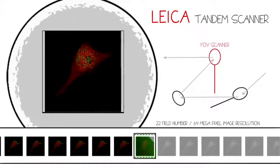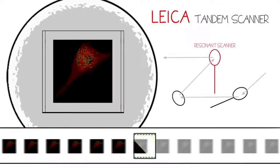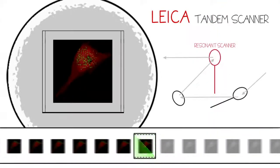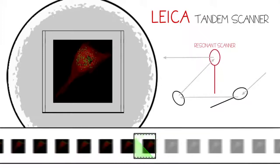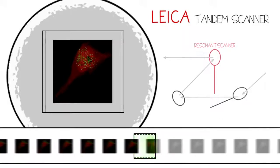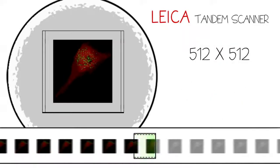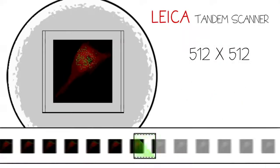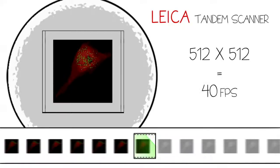Leica's fastest resonance scanner oscillates at 12,000 Hz in the x-direction and can run at a bidirectional rate of 24,000 lines per second. For a standard 512 x 512 live cell imaging resolution, this translates into 40 full frames per second.